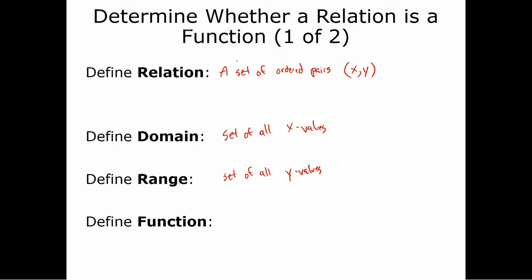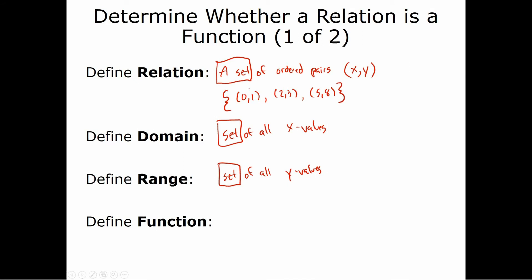The term 'set' is important here. When we talk about sets, we use set notation — sets are always denoted by braces. So if we have a set of ordered pairs like (0,1), (2,3), (5,8), we put them all in braces. The ordered pairs are separated by commas, but the entire set is in braces. The domain — the x values — would be {0, 2, 5}, and the range — the y values — would be {1, 3, 8}.